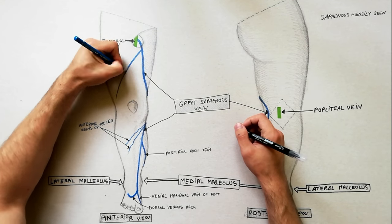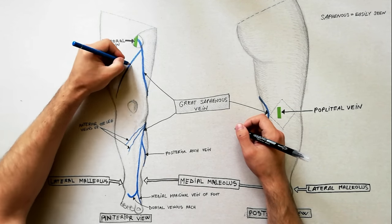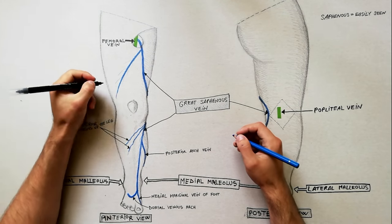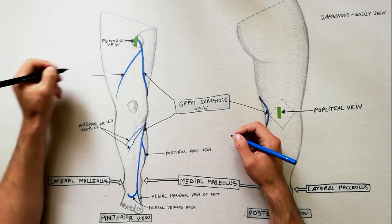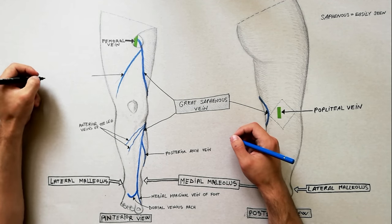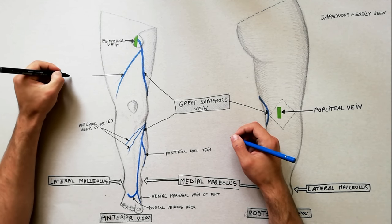In the thigh, accessory saphenous vein. This vein commences in the lower part of the front of the thigh and joins the great saphenous vein in the upper part of the thigh.